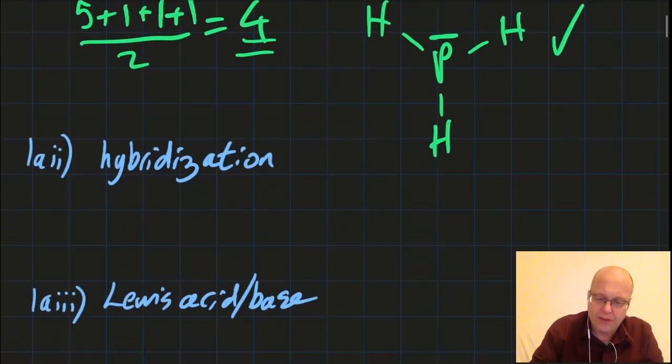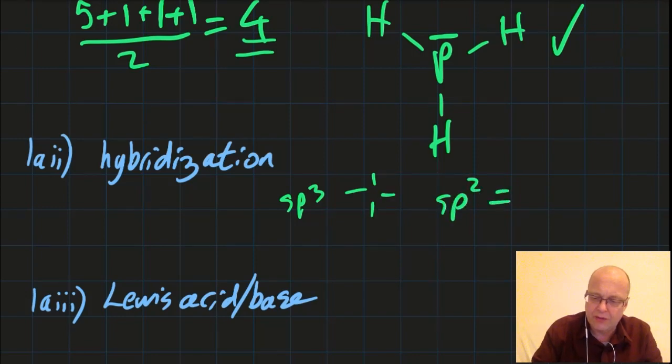Hybridization. Well, anything that's sp3 is mostly single bonds. Sp2 is going to have double bonds, and sp is going to have triple bonds. So that looks like sp3 to me.